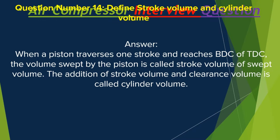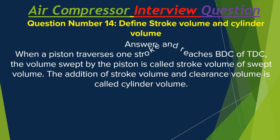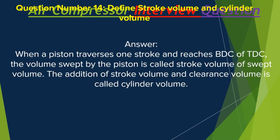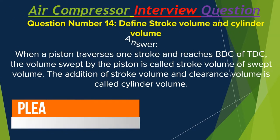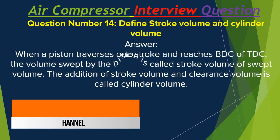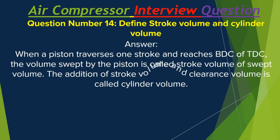Question number 14: Define stroke volume and cylinder volume. When a piston traverses one stroke and reaches BDC or TDC, the volume swept by the piston is called stroke volume or swept volume. The addition of stroke volume and clearance volume is called cylinder volume.